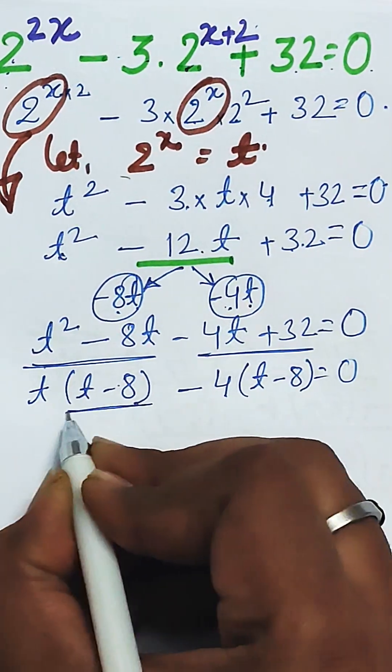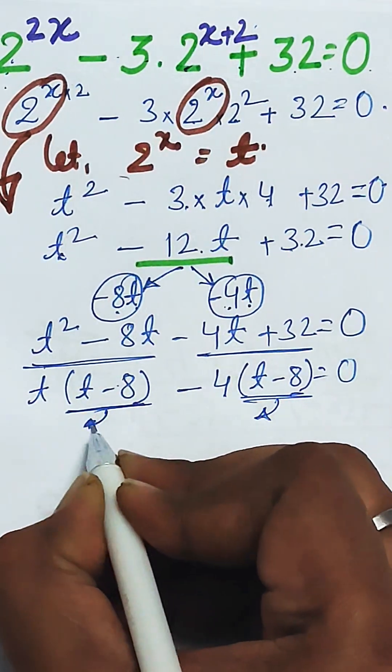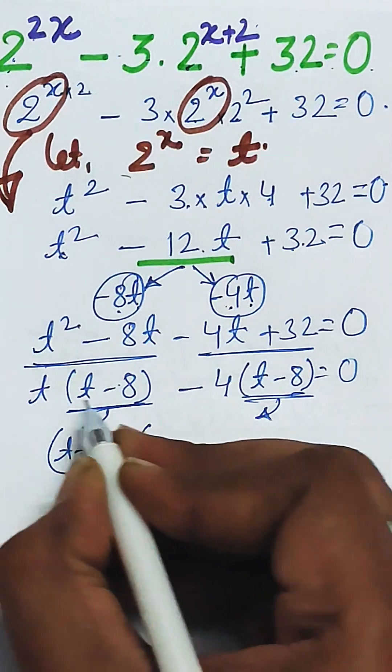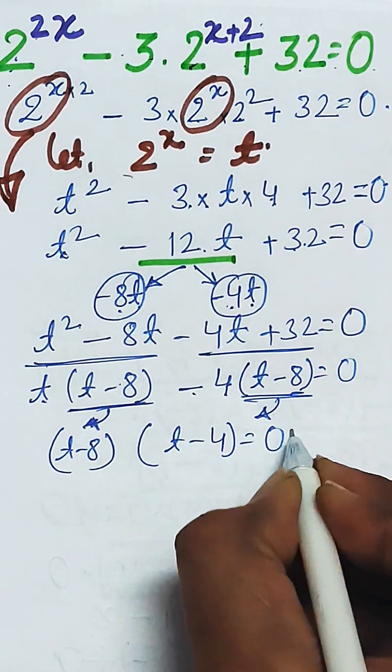Now you can see t minus 8 and t minus 8 is common in both terms. So we will bring out t minus 8 and we are left with t minus 4, as equal to 0.